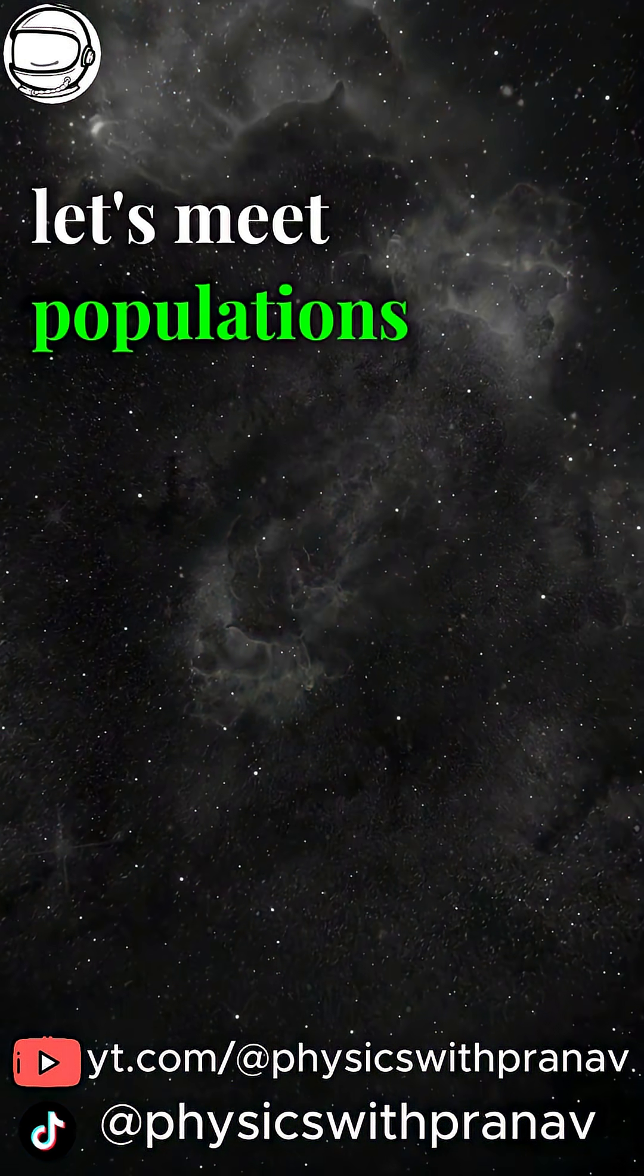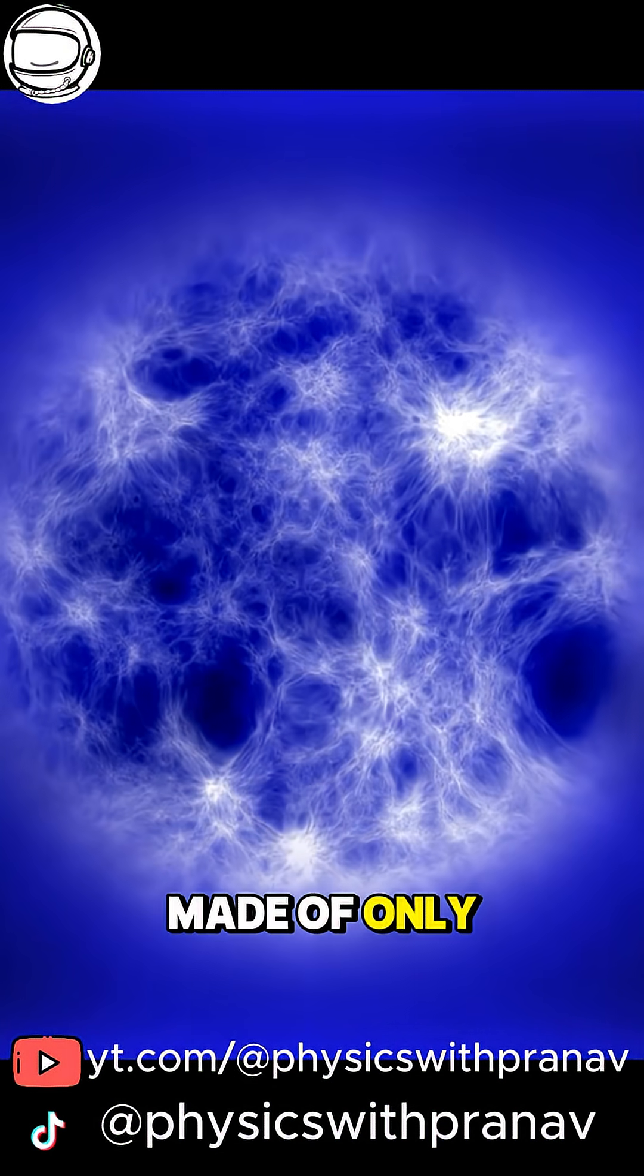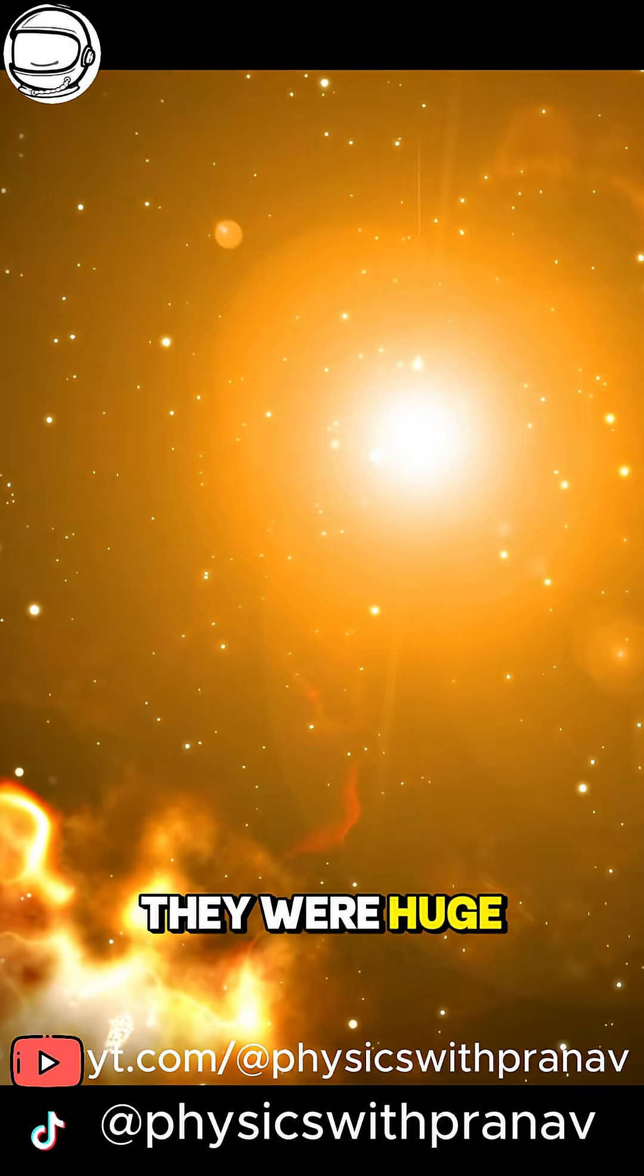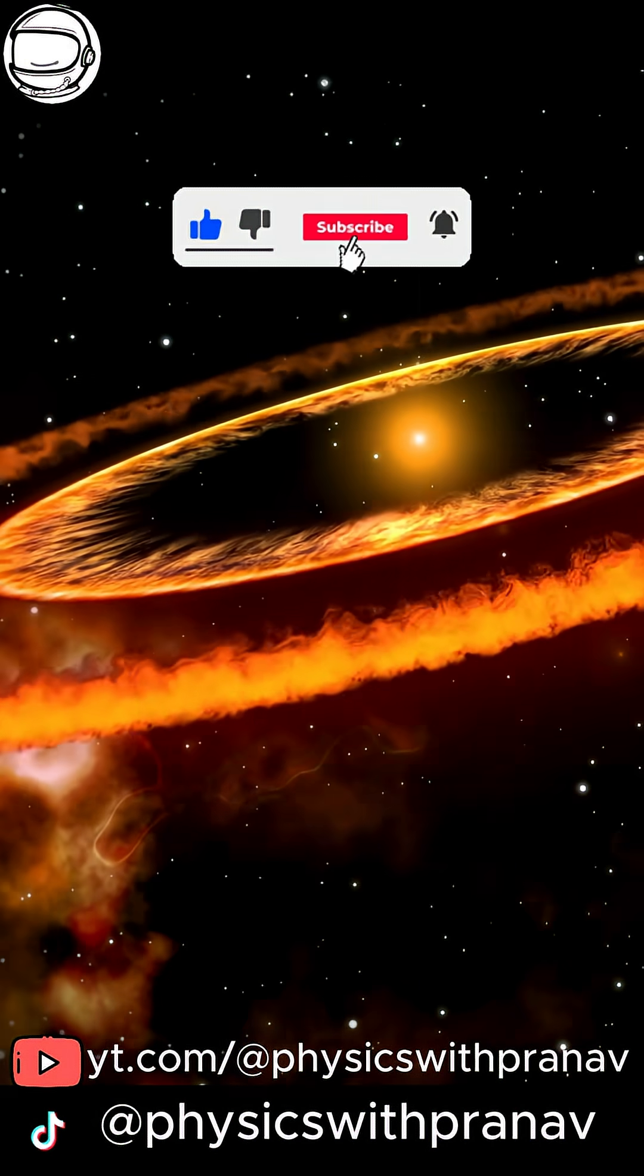Let's meet Populations 3, 2, and 1 stars. Population 3 stars were the very first generation, made of only hydrogen and helium because no heavy elements existed yet. They were huge, short-lived, and exploded to seed the universe with metals.